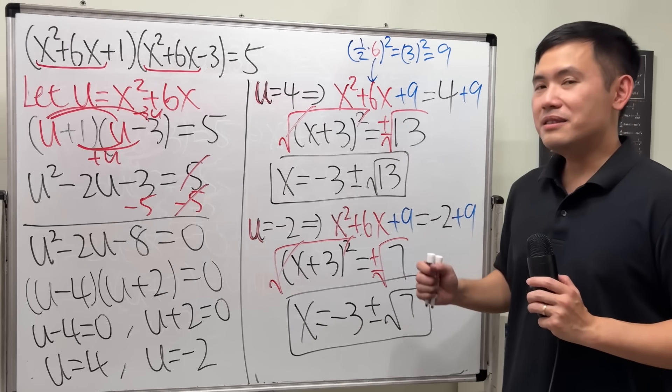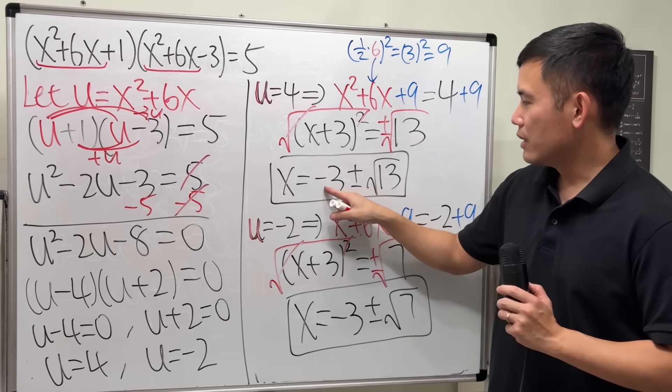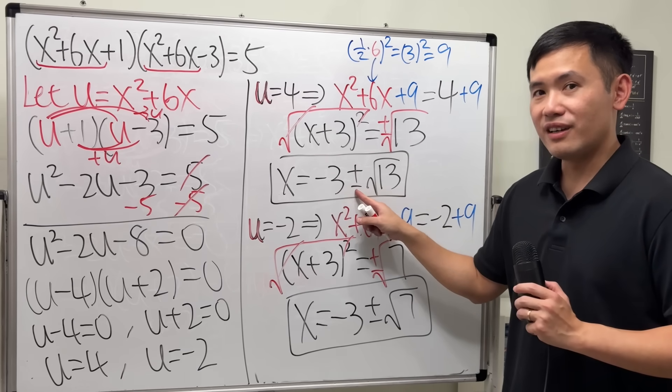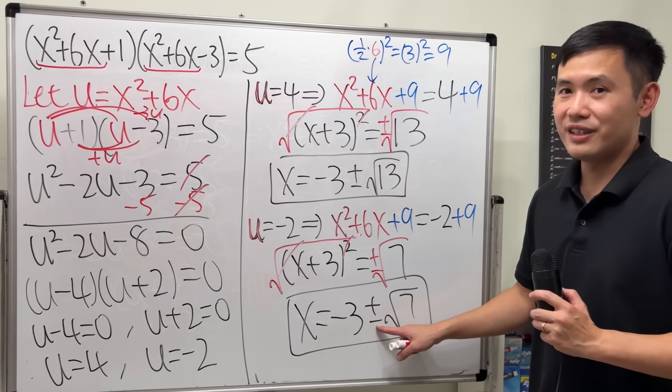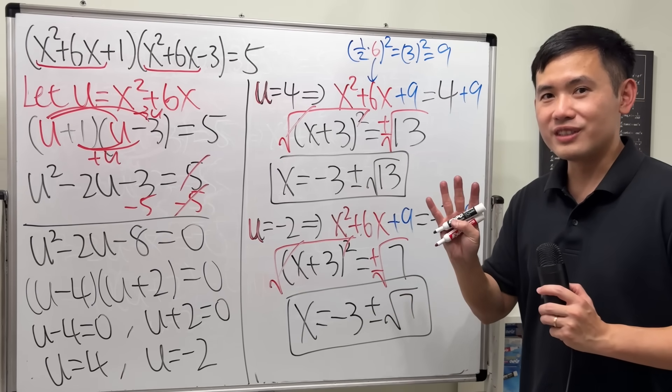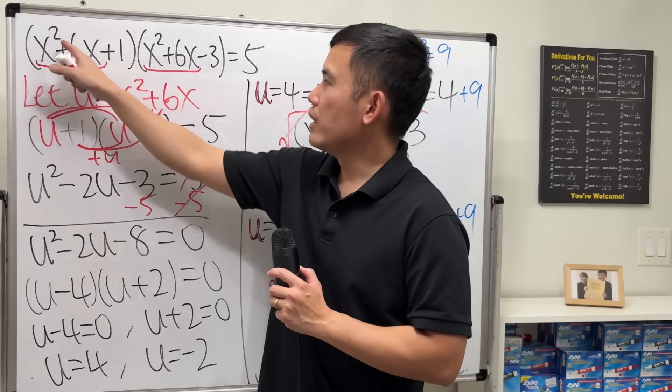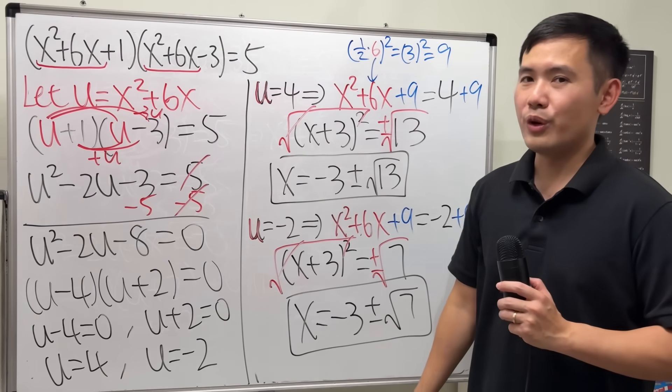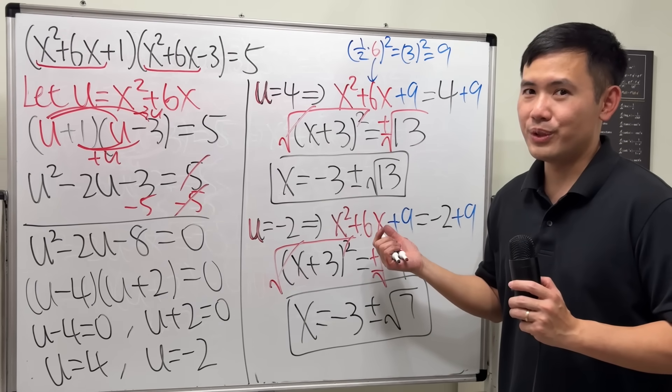So, how many answers do we have? In fact, 4. The first one is negative 3 plus square root of 13. The second one is with the minus here. And then the third one is with the plus here, and then the fourth one is here. Now, why do we have four solutions? Well, because originally, when we have x squared times x squared, this is actually a fourth degree polynomial equation. And we end up with four different answers, which is pretty cool.